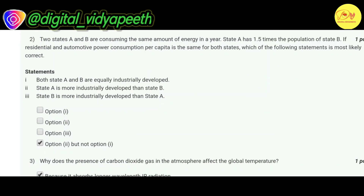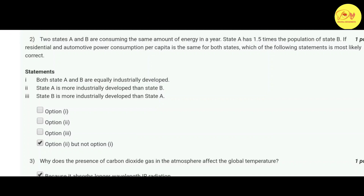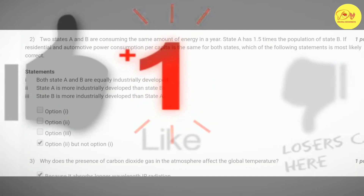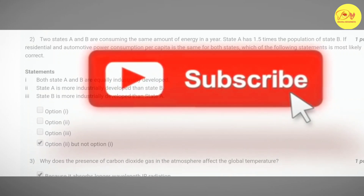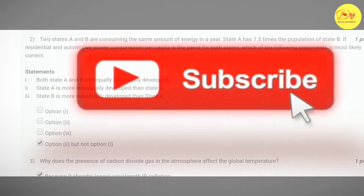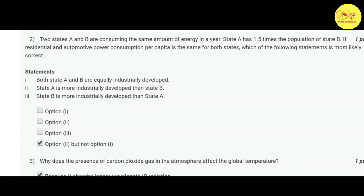Our second question: two states A and B are consuming the same amount of energy in a year. State A has 1.5 times the population of state B. If residential and automotive power consumption per capita is the same for both states, the correct option is D — option second but not option first — that state A is more intrinsically developed than state B, and both states are equally intrinsically developed.